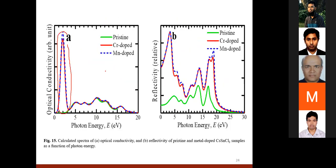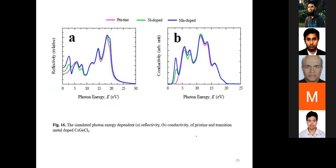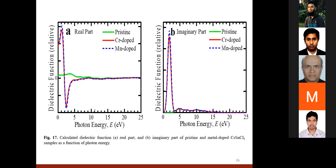The previous results are for cesium tin chloride and this slide is for cesium germanium chloride. The dielectric function is also important — the real part of the dielectric function as a function of photon energy is higher for doped samples, indicating enhanced charge recombination suppression.